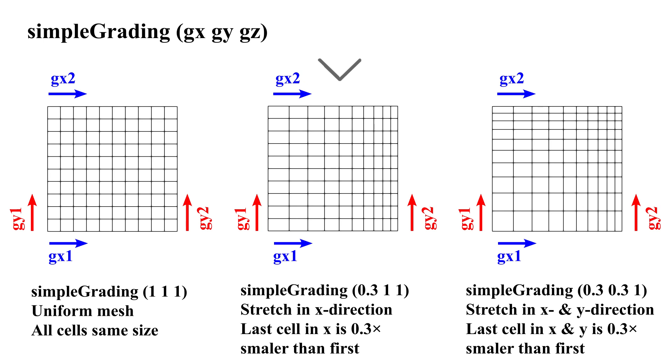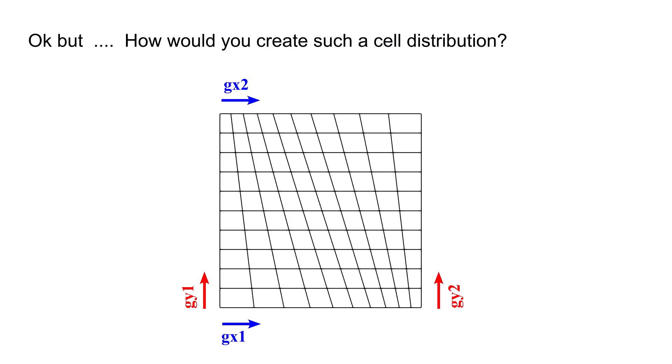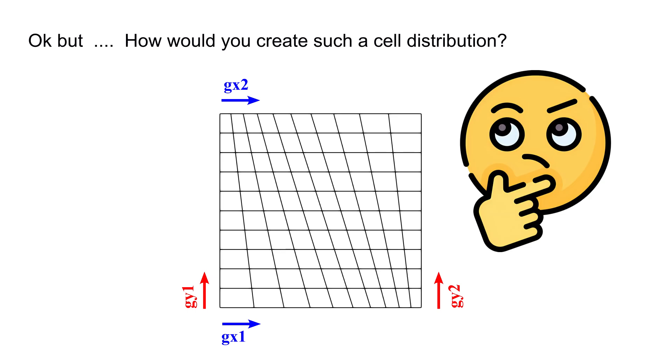For example, a value of 0.3 makes the last cell about 0.3 times smaller than the first, which is useful when we want to refine cells near a specific boundary. As you can see here, simple grading provides a fast way to stretch or compress cells, but it applies the same ratio along all edges in that direction. Okay, but how would we create such a cell distribution that has different bias directions on the first and second edges in the X direction? Simple grading cannot handle this. And here comes the power of edge grading.